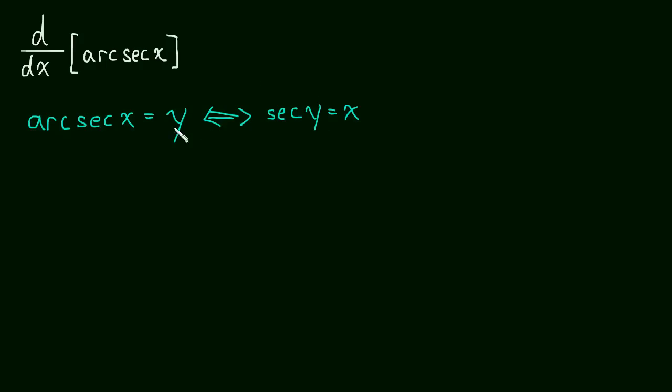And now we're going to take this derivative here. To take that derivative, it's just a chain rule. We get secant y tangent y times dy dx.